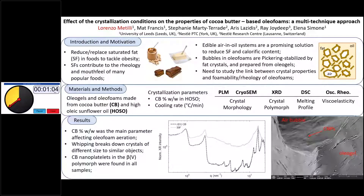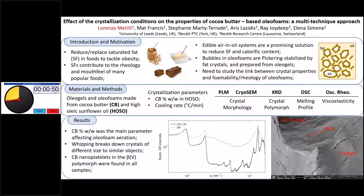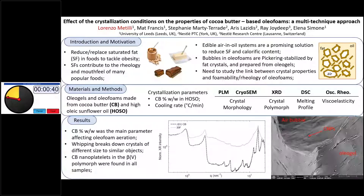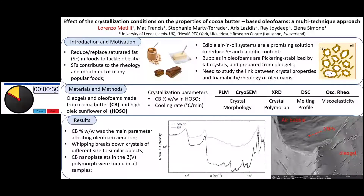We also found that the cocoa butter crystals at the end of crystallization and in the oleofoams were in the beta-5 form, which is one of the desired polymorphs due to their desirable properties. In the middle graph at the bottom, the black trace is reference cocoa butter in beta-5, while the gray trace is one of my samples. A cryo-SEM image of an oleofoam shows that inside the bubble, cocoa butter nanoplatelets face towards the interface, whereas in the oleogels shown bottom right, they have a different orientation — poking out differently. We think this is further proof of their Pickering stabilization mechanism.